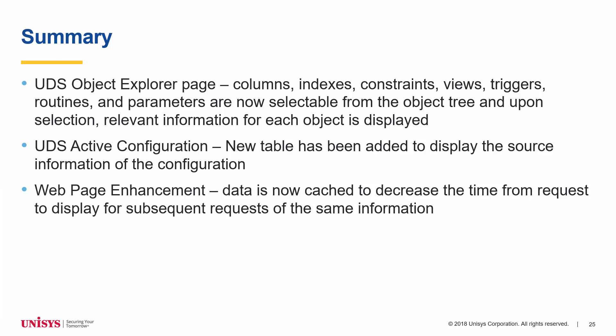Thank you for watching this presentation about the new features for the database webpages of the APEX product and the Unisys ClearPath OS 2200 18.0 release. We covered enhancements to the UDS Object Explorer page and the UDS Active Configuration page. For the UDS Object Explorer page, the remaining objects — columns, indexes, constraints, views, triggers, routines, and parameters — are now selectable from the object tree, with relevant information displayed upon selection. For the UDS Active Configuration page, a new Source table has been added. Across both pages, data retrieved from the UDS database is cached to decrease the time from request to display for subsequent requests.